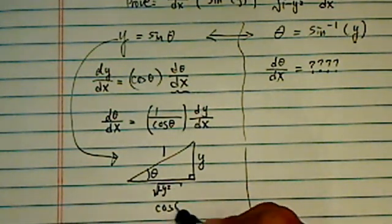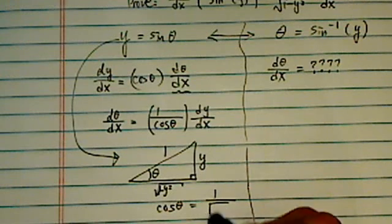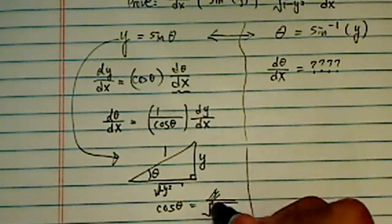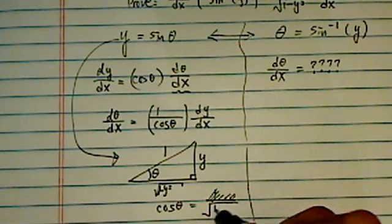Then, cosine theta squared is equal to 1 over, not 1 over, cosine theta equal to 1 minus y squared over 1. Okay.